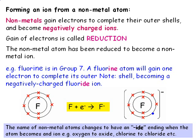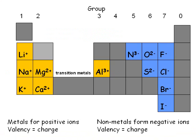Notice that the fluoride ion undergoes a name change, getting an '-ide' ending, to show that it's a negative ion — this doesn't happen with positive ions. Having gained an extra negatively charged electron, the outer shell is full, and the fluoride ion has an overall charge of 1-. Again, the number of the charge is the same as the valency. If we look at the elements which commonly become ions, we can see the ions they each form, and notice how the valency helps us tell the charge on these ions.